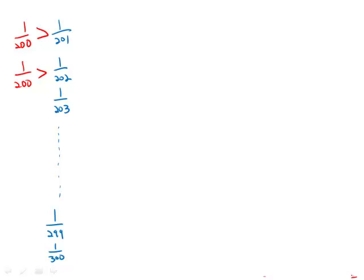So that means if I add up just 100 of 1 over 200, well 100 times 1 over 200 equals one half. That has to be greater than m, because 1 over 200 is greater than every number on the list.